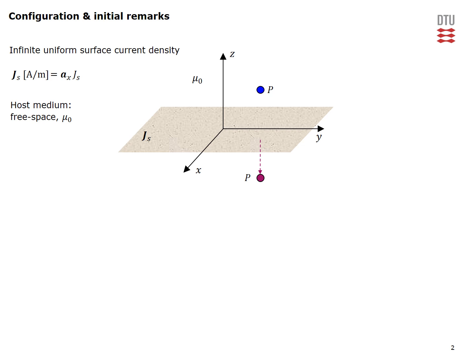So this is our surface current configuration. We have introduced a rectangular coordinate system so that the surface current resides in XY plane. It has this direction along X unit vector and it has a constant magnitude Js. It's located in the free space host medium with this free space permeability.